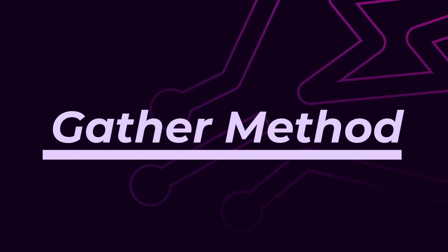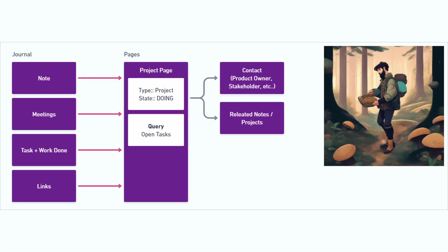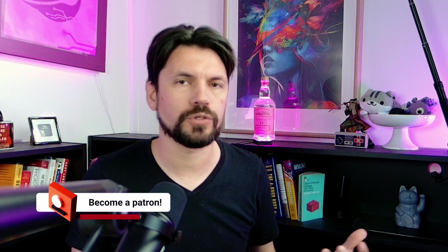Logseq is really good at all these things, except maybe working together with people — but we'll get to that in the last method, the Outsourcer. The first method is the Gatherer method. It's the simplest and something you do in Logseq nearly all the time. You make a project, give it a dedicated page with type 'project,' and just start linking towards it from meetings, tasks, notes, and links.